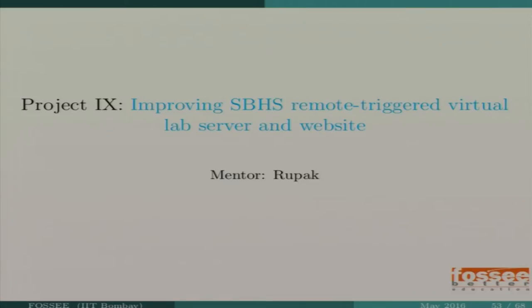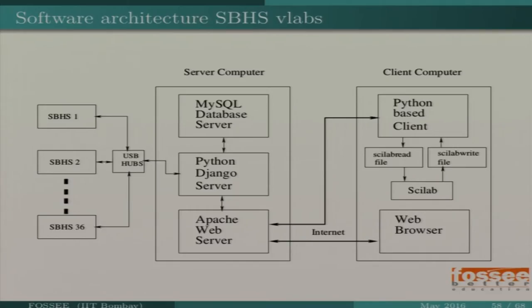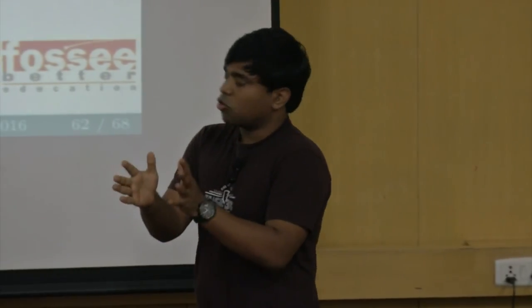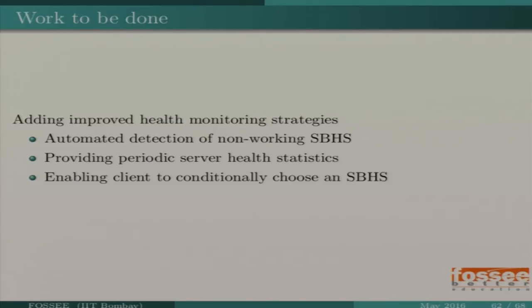Project 2 is about improving the already available SBHS architecture and implementation. We already have SBHS running with students logging in and doing experiments. The present setup cannot detect failures. Suppose one of the 38 SBHS units goes down at night and there's an experiment scheduled for 8 AM the next morning — the system doesn't automatically detect that or notify the admin. You need to add such modules and APIs to the existing Django code. Providing periodic health statistics is similar to the first requirement.